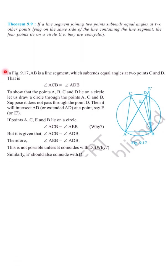So here we discuss theorem 9.9. It says if a line segment joining two points subtends equal angles at two other points lying on the same side of the line containing the line segment, then the four points lie on a circle.